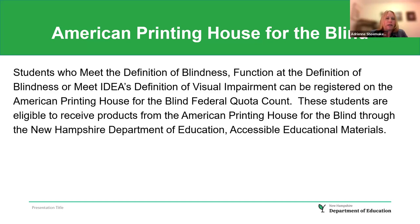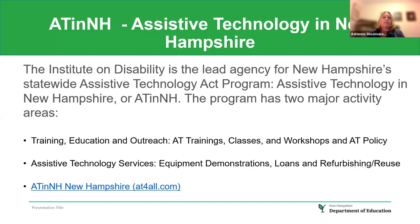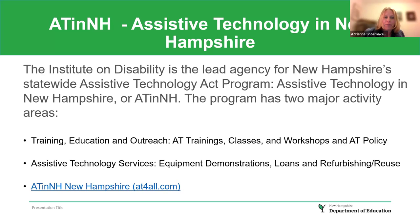One place to obtain devices is through the American Printing House for the Blind. Students who meet the definition of blindness or IDEA's definition of visual impairment can be registered on the APH federal quota account. These students are eligible to receive products through the New Hampshire Department of Education Accessible Educational Materials. Other products can be borrowed through AT&NH — Assistive Technology in New Hampshire. The Institute on Disability is the lead agency for New Hampshire's statewide Assistive Technology Act program, with two major activity areas: training, education and outreach; and Assistive Technology Services, Equipment Demonstrations, Loans, and Refurbishing and Reuse. The website is atforall.com.